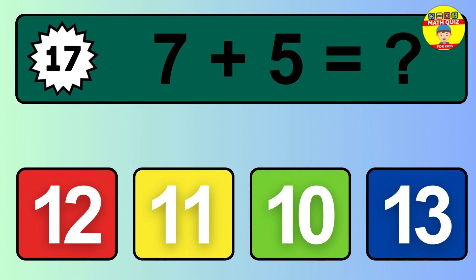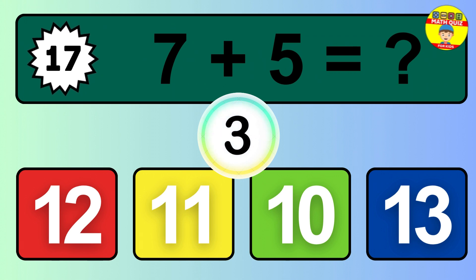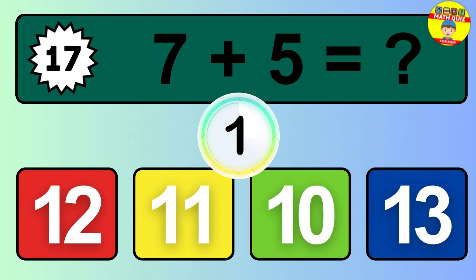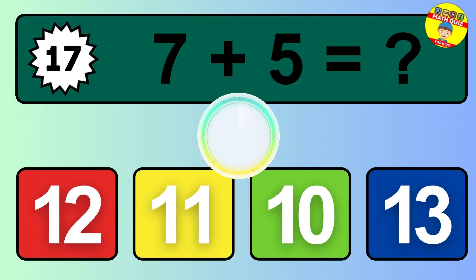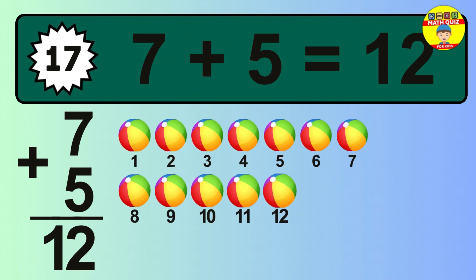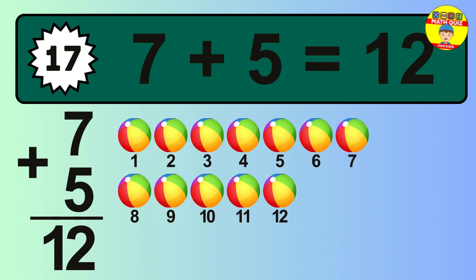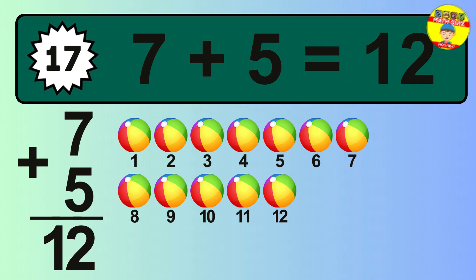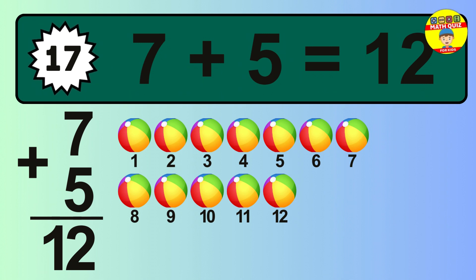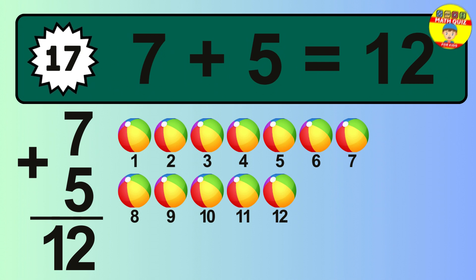Question 17. 7 plus 5 equals what? So the answer is 7 plus 5 is 12. Let's count it: 1, 2, 3, 4, 5, 6, 7, 8, 9, 10, 11, 12.